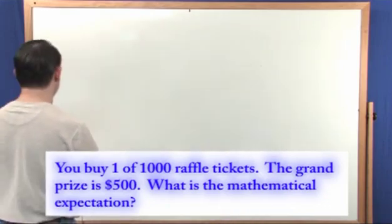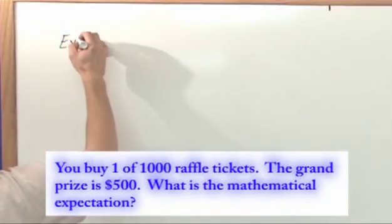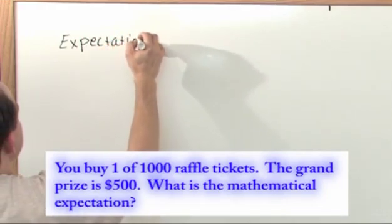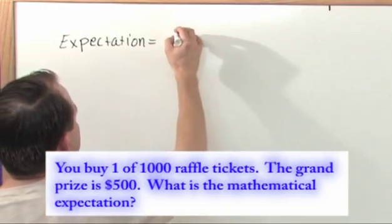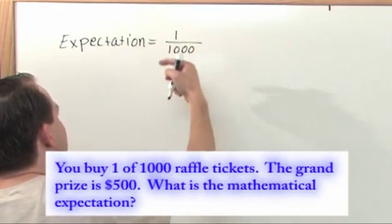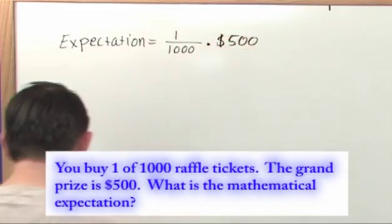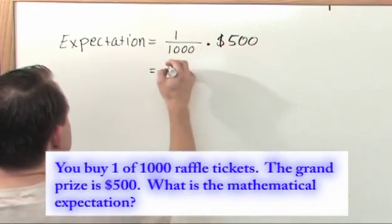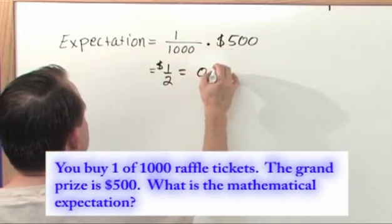Well, if we look at this we could say that the expectation, the mathematical expectation, it's a big word, that's all it is, for this experiment would be equal to, and I'm just going to tell you what it is, the probability that you're going to win, which is one out of a thousand, one chance to win out of a thousand tickets times the grand prize, which is $500. Now let's take a look at this. What's this going to be? 500 divided by a thousand is going to be one half, the unit is dollars, so, 50 cents.